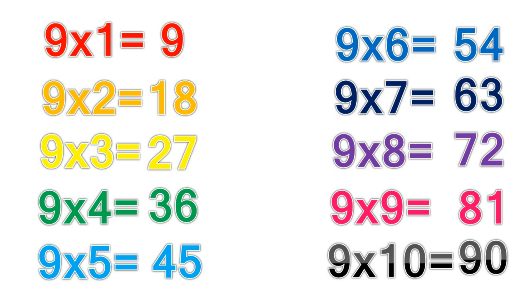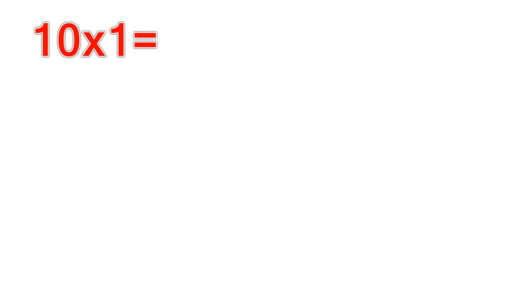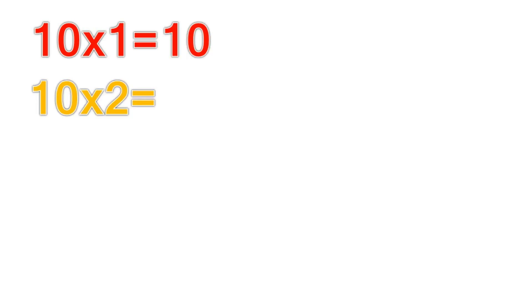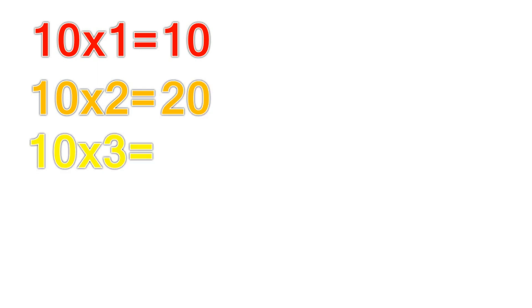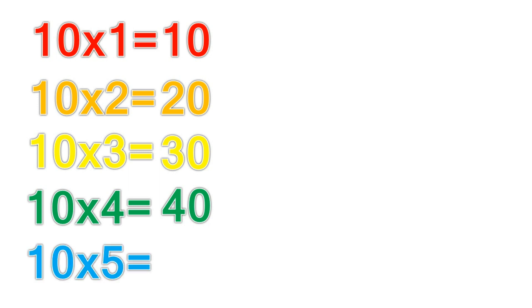10 times table. 10 times 1 equals 10. 10 times 2 equals 20. 10 times 3 equals 30. 10 times 4 equals 40. 10 times 5 equals 50.